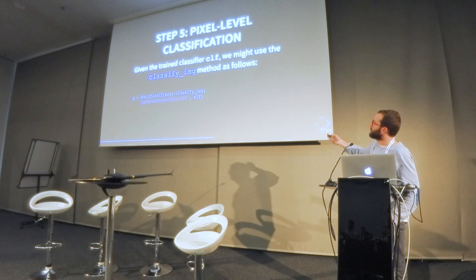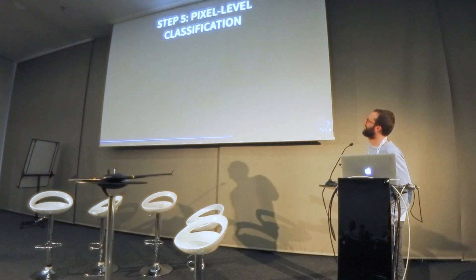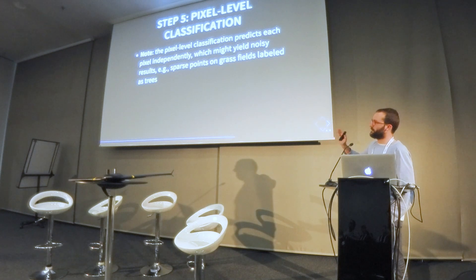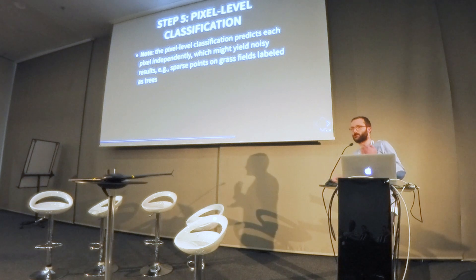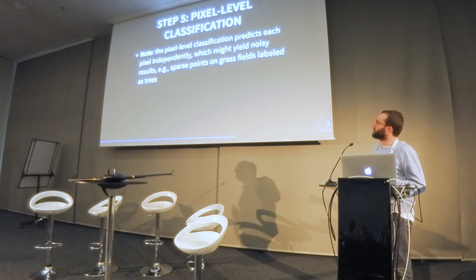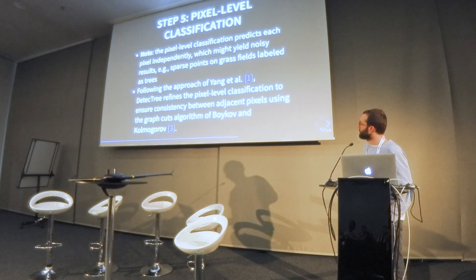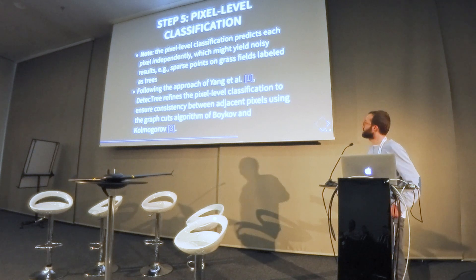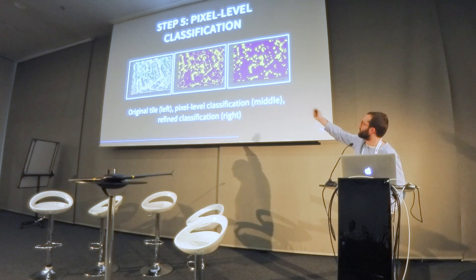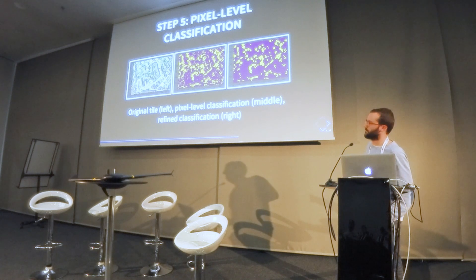Once we have the classifier, we can very easily classify an image, which gives us something like that. An important note: pixel-level classification can be noisy because of color information — there might be grass considered as trees, or pixels inside trees not classified as trees. So we use a computer vision algorithm called GraphCuts to ensure that classified pixels are consistent. You can see the difference — without GraphCuts there are noisy points in the middle, but this is a parameter we can adjust.